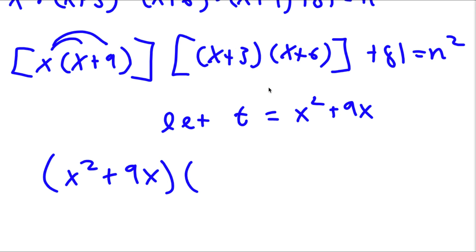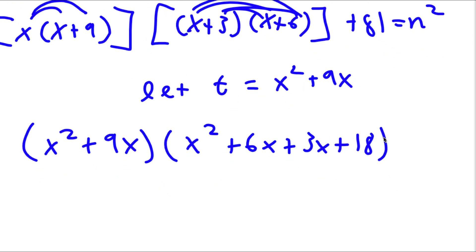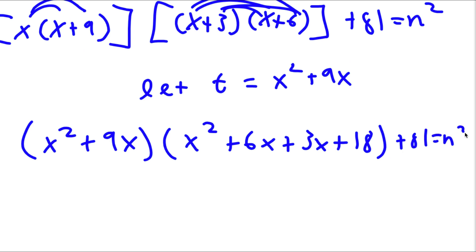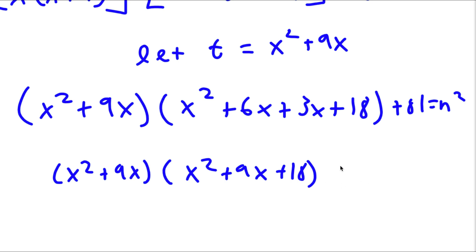Now (x + 3)(x + 6): x times x is x², plus x times 6 is 6x, plus 3 times x is 3x, plus 3 times 6 is 18. Plus 81 equals n squared. So 6x plus 3x is 9x, giving us x² + 9x + 18.